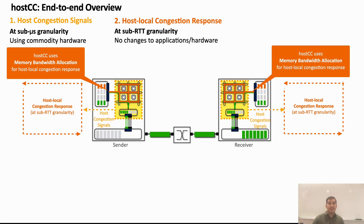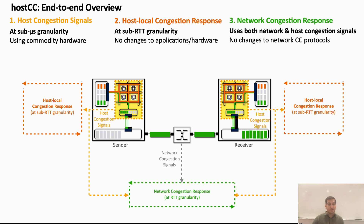Note that the Host CC architecture does not dictate the precise resource allocation policy. Just like different network resource allocation mechanisms use different allocation policies, like max-min fairness, prioritization, etc., we envision Host CC to embody various host resource allocation policies and respective implementations. Finally, Host CC uses both host and network congestion signals to perform efficient network resource allocation at RTT timescales. The key insight is that sending rate for network traffic must be computed based on the bottleneck capacity, not just within the network, but also at the host interconnect. Host CC can be integrated with any network congestion control protocol; the only difference is that the protocol will now use both host and network congestion signals.